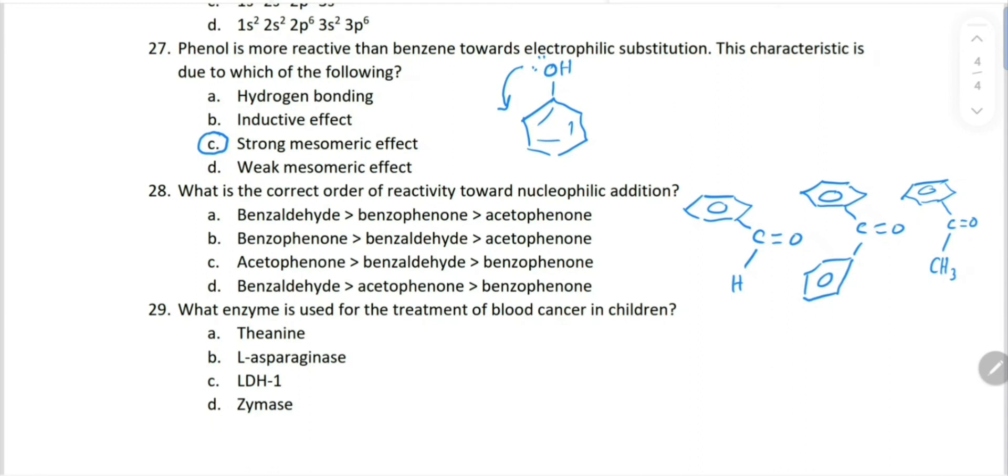Now remember, aldehyde's reactivity is much greater compared to ketone, so first position should be benzaldehyde. Where is benzaldehyde? This is in choice D - benzaldehyde. Now these two are ketones. In these ketones we'll find steric hindrance. Since benzophenone has two bulky groups, and because of these bulky groups, the nucleophile won't be able to approach here. Whereas in acetophenone, the methyl is small in size, and here the nucleophile can easily approach. So second position, more reactive should be acetophenone, and that is over here, acetophenone. And then benzophenone. So the correct choice is choice D.